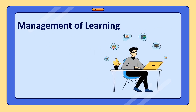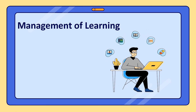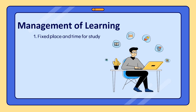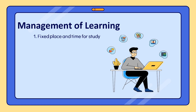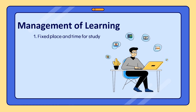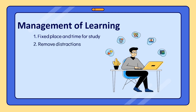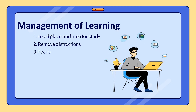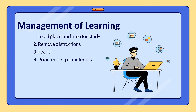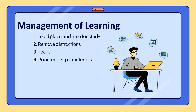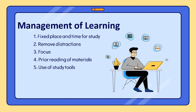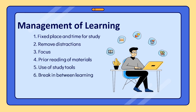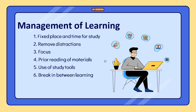If you are wondering how an individual could manage their own learning, here are some tips. Find a fixed place and time for study — our learning zone could be our room, the terrace, or the sala, in the morning, afternoon, or evening — to be comfortable to learn. We must also remove distractions like turning off our mobile phone's notifications to focus. We can read prior materials or related topics and use study tools like books, magazines, and even searching online.